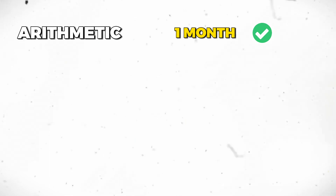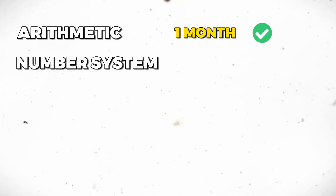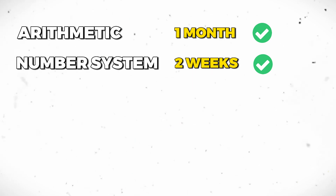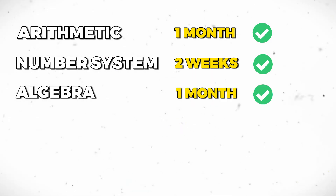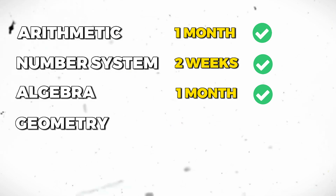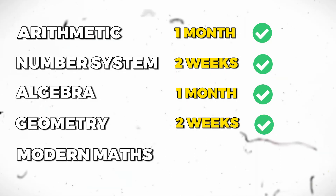As far as the sequence and timeline goes, you should cover arithmetic in the first month of your preparation. Then number system in the next two weeks, algebra in the next one month, geometry in the next two weeks, and modern maths in another two weeks. In this way, you would have covered the entire quant syllabus in about three to three and a half months — or four months if you take a break in between.